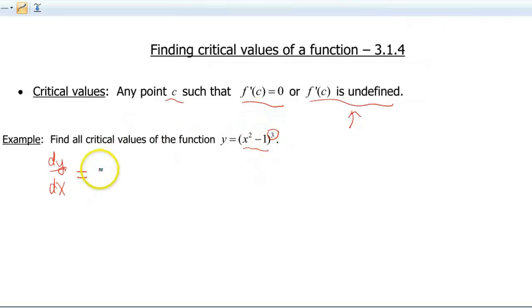The chain rule says go ahead and bring down that power, rewrite your inside function, reduce your power by 1, and then multiply by the derivative of the inside.